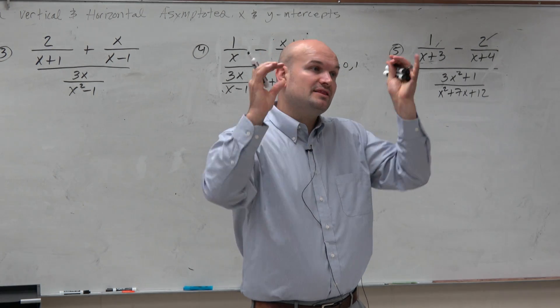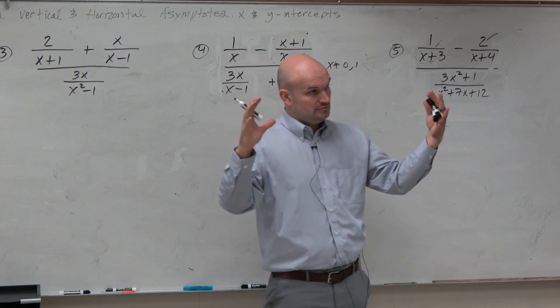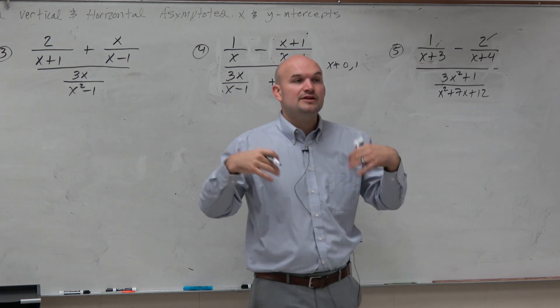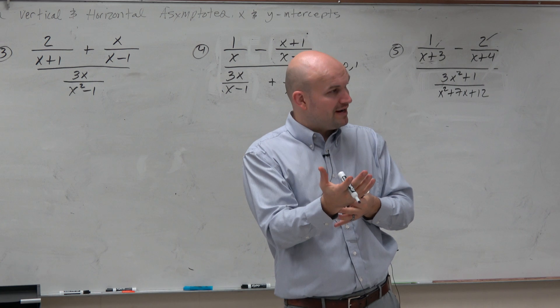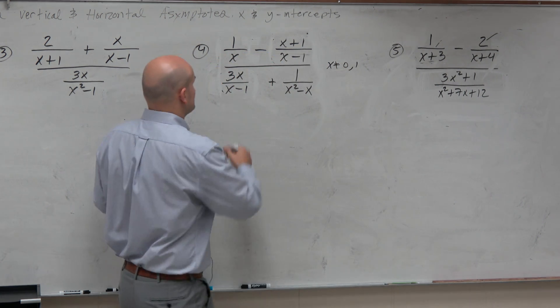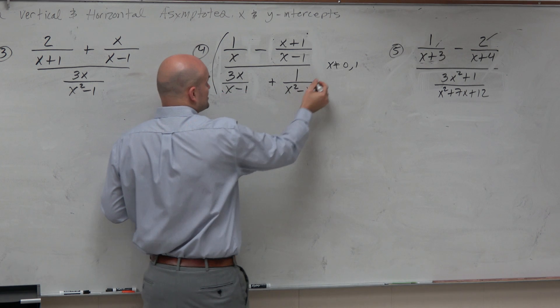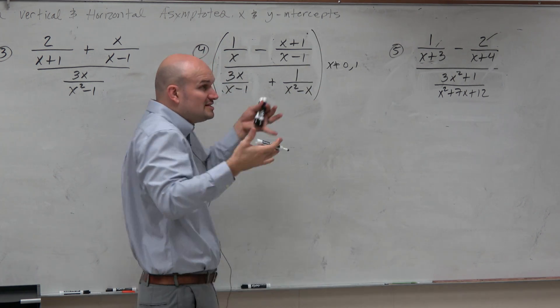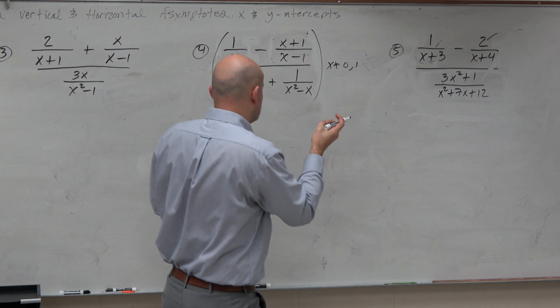So what you want to do is find the restrictions on your original problem. And then you want to go ahead and find the restrictions on the simplified problem. So how are we going to simplify this? Well, the way that I taught this for graphing rational equations, or solving rational equations, is really the same process I want to do here. I want to identify the LCD.